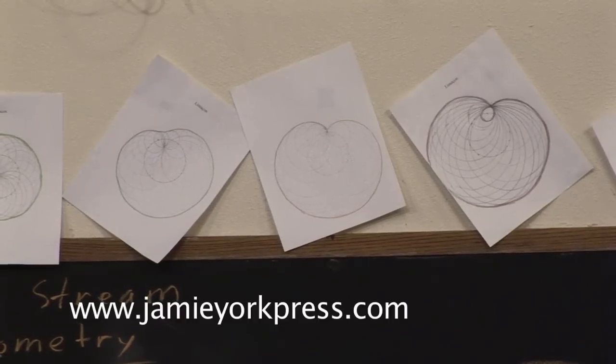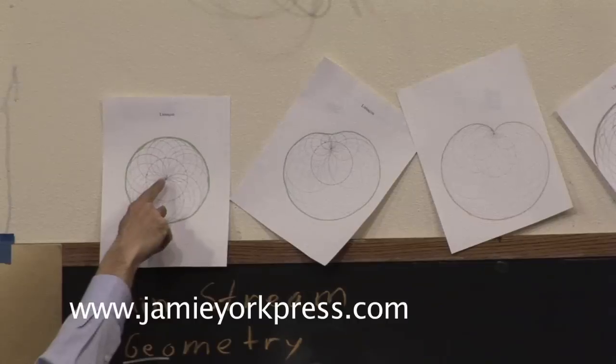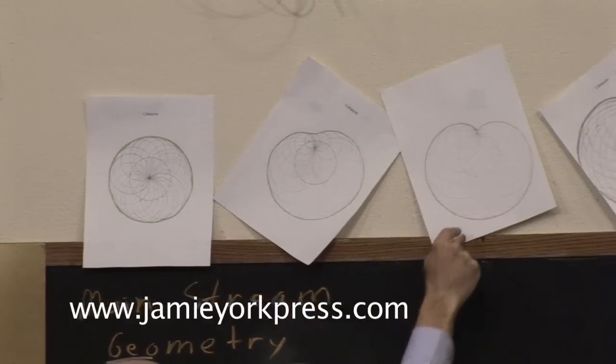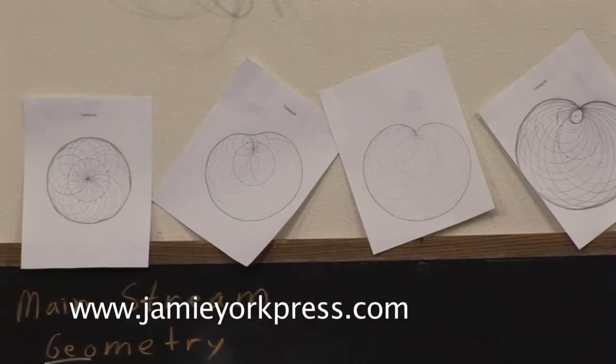What happens when the cusp moves? So here we see the cusp at the center, and now it moves up higher, it's right there. Now it comes right to the edge of the circle, and that's the heart shape, the cardioid.